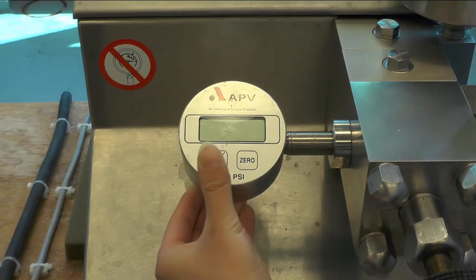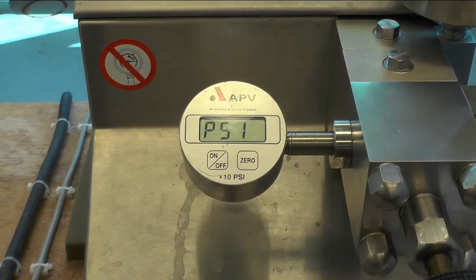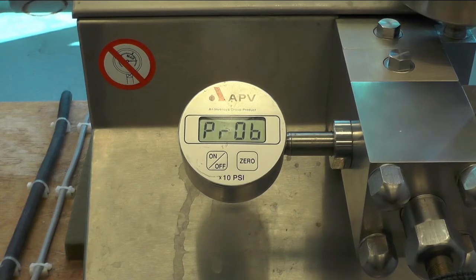Turn on the digital pressure gauge by pressing the on-off button. Zero the gauge if the display is not already displaying zero.